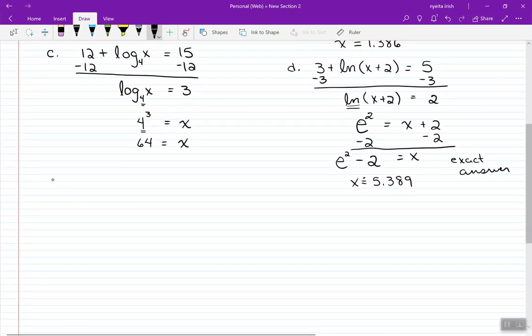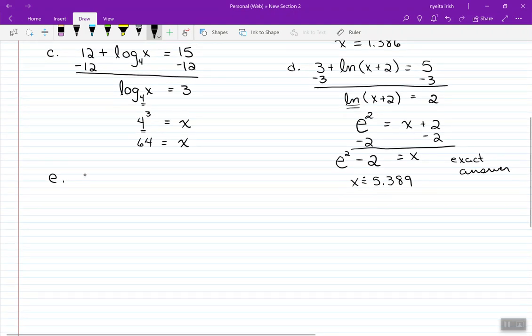I'm going to try one more here. That's 3 minus log x equals 6. I need to get rid of the 3 in front. Try to get the logarithm completely by itself. So take away 3.